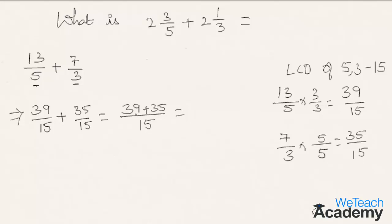We get 39 plus 35 is nothing but 74/15. So as the question asked here is in a mixed fraction form, the result also must be in a mixed fraction.